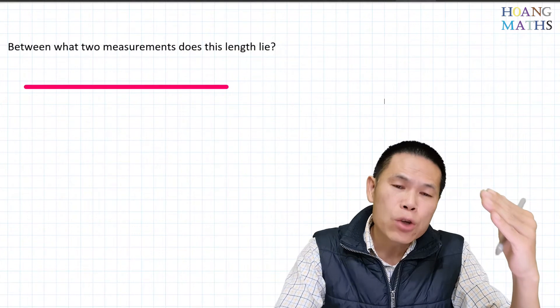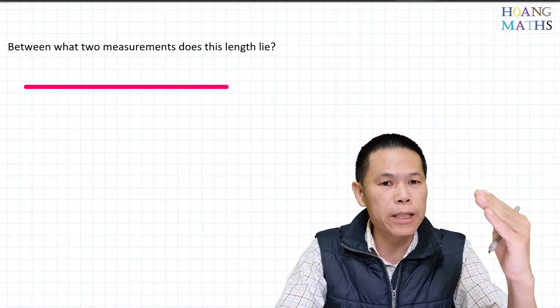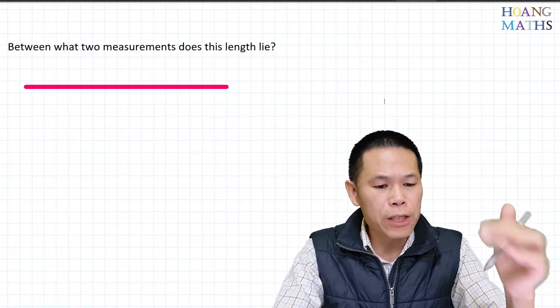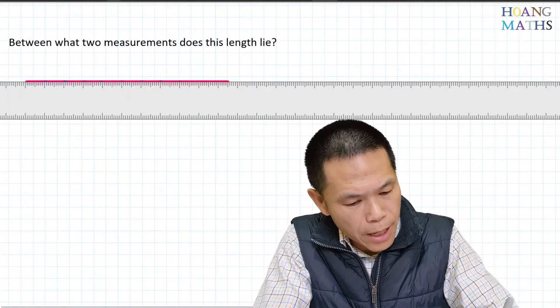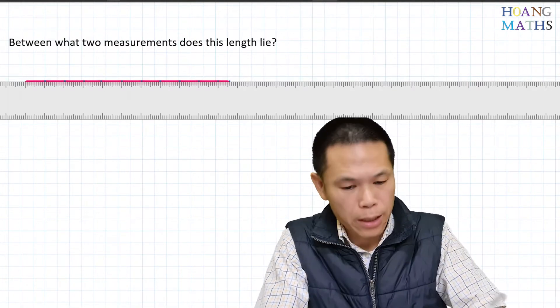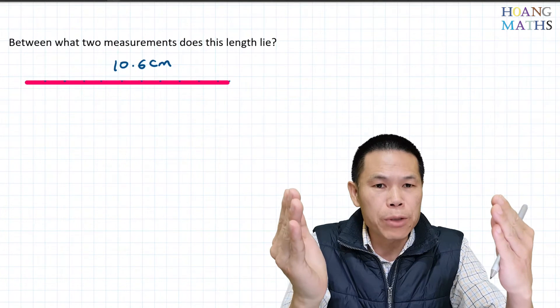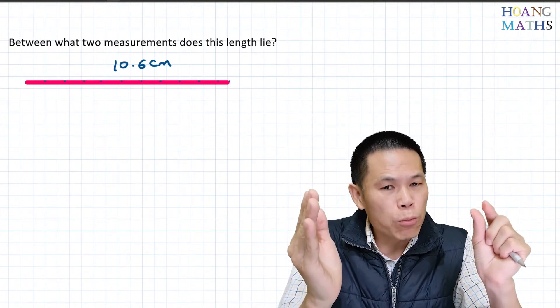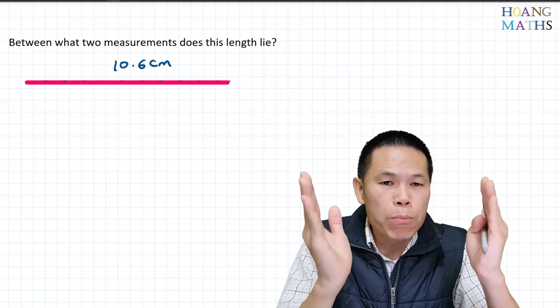If you downloaded the worksheet and are working with me, your measurements might be slightly different because the scale might be different. Let me measure this length — roughly one, two, three... ten point six centimeters. So the length is 10.6 centimeters. Note that this is to one decimal place, so the degree of accuracy is 0.1 centimeters.